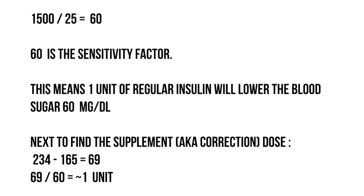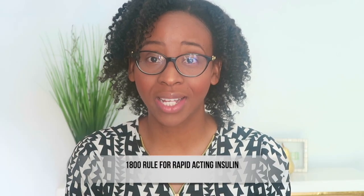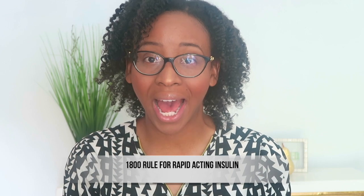Next, to find the supplemental dose, you take the elevated blood sugar of 234 and subtract the goal of 165, which equals 69 mg/dL. Then you divide 69 by the sensitivity factor of 60, which gives you roughly one unit. So one additional unit of insulin is needed to bring down this blood sugar.